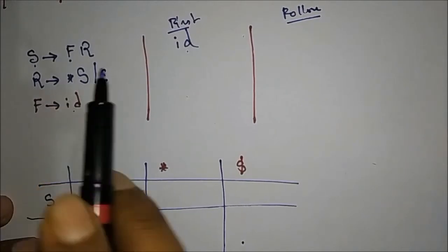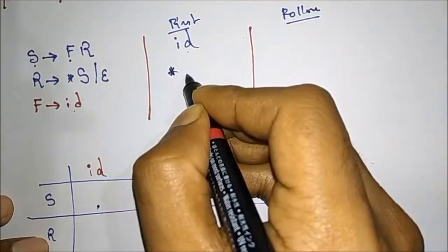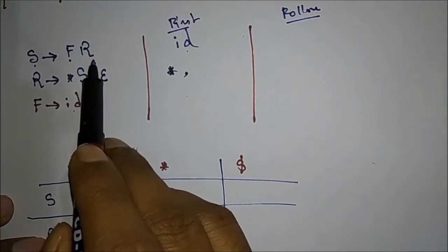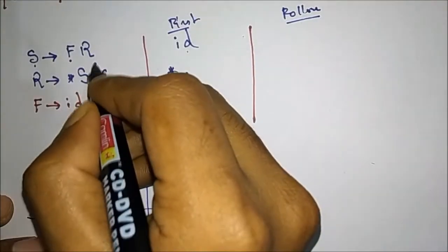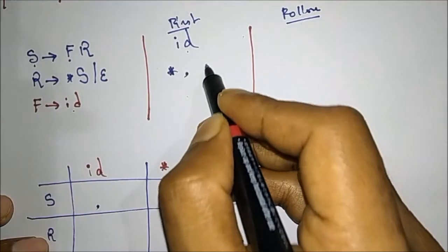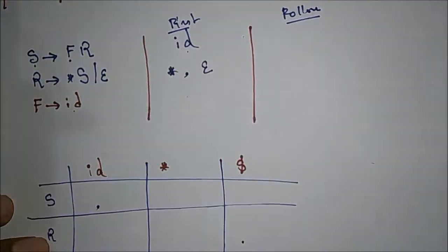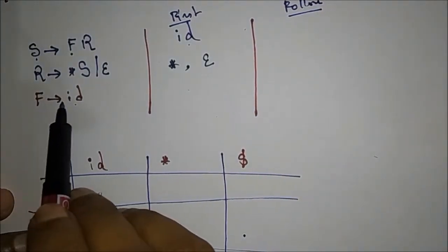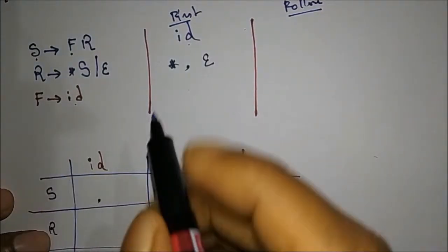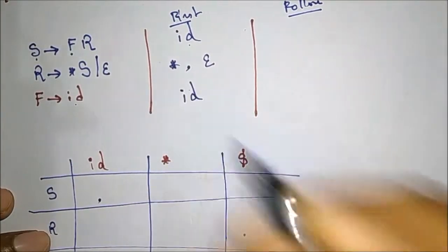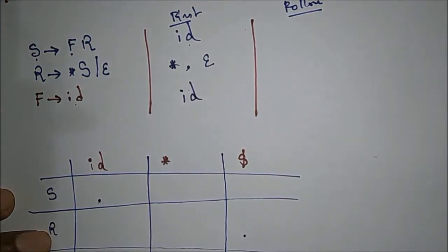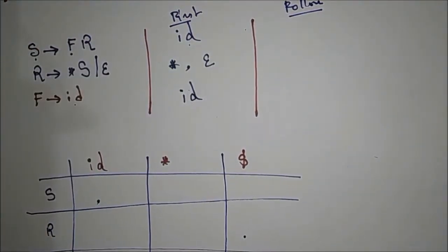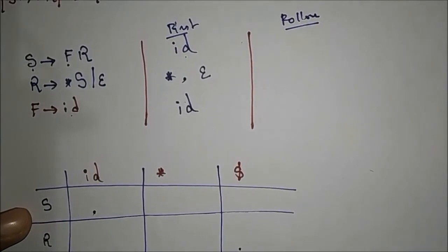Now, what is the FIRST of R? The FIRST of R is asterisk (*), and epsilon is also given — so FIRST(R) = {*, ε}. What is the FIRST of F? The FIRST of F is only ID. So FIRST(F) = {ID}. This completes the FIRST sets for the three productions.